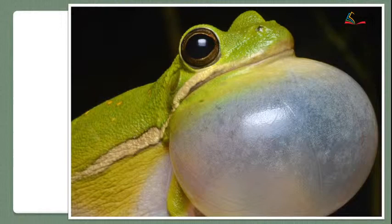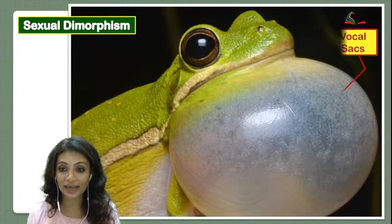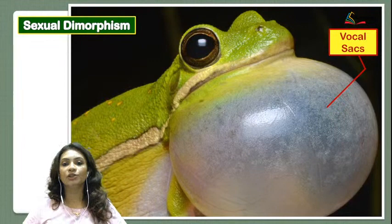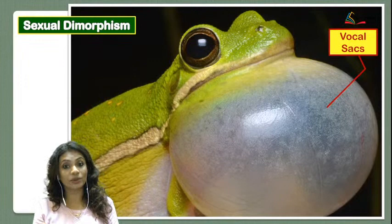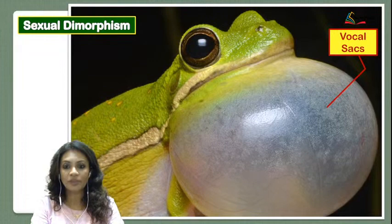You may have seen frogs with structures in different, sometimes very vibrant colors. These structures are called vocal sacs, and they are present only in the male frog. Because of the vocal sac, you can tell whether a frog is male or female. This means frogs show sexual dimorphism — just by observing external features you can determine the sex of the frog.